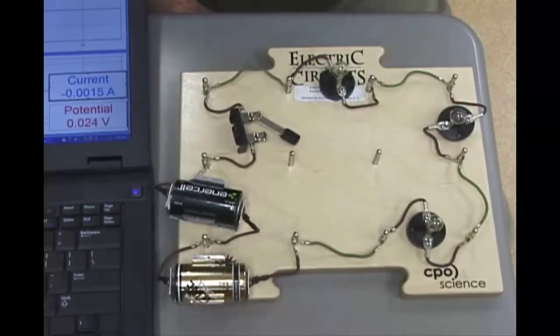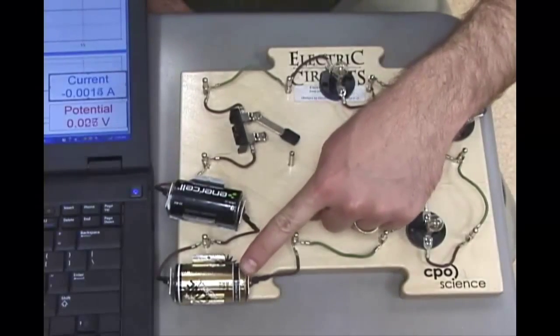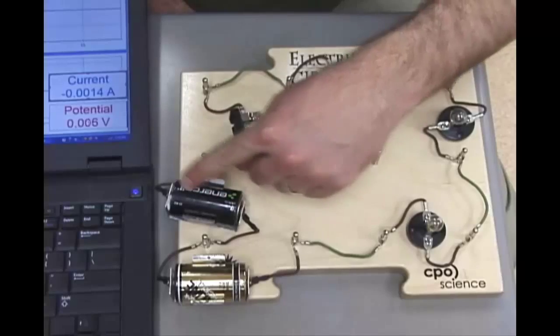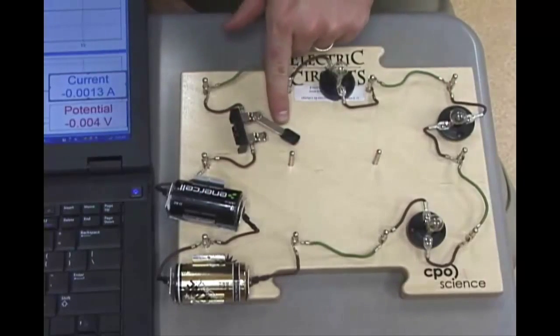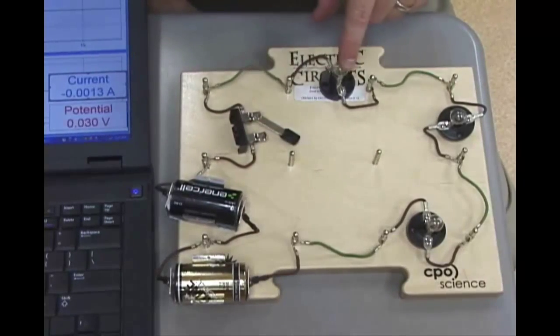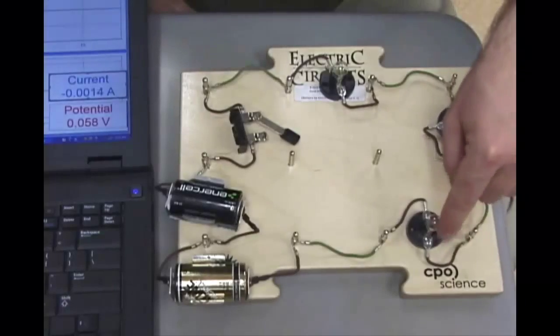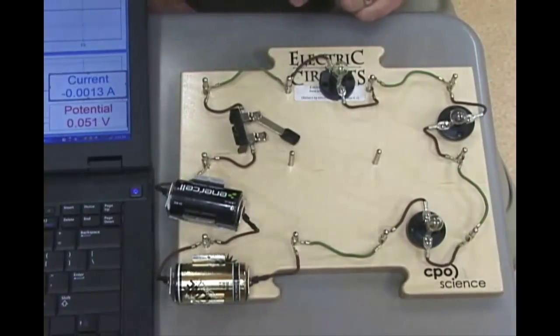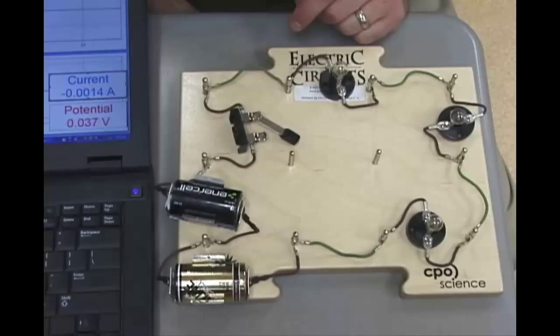Okay, so what kind of circuit is this? If we look here, we have a battery connected to a battery, connected to a switch which happens to be open, connected to a light bulb, light bulb, light bulb, back to the battery. So what kind of circuit is this? Good, a series.